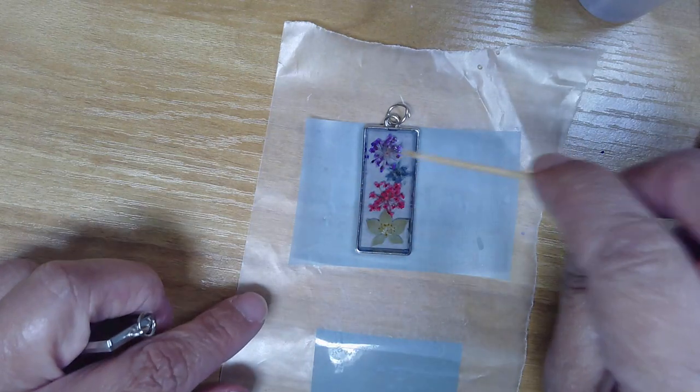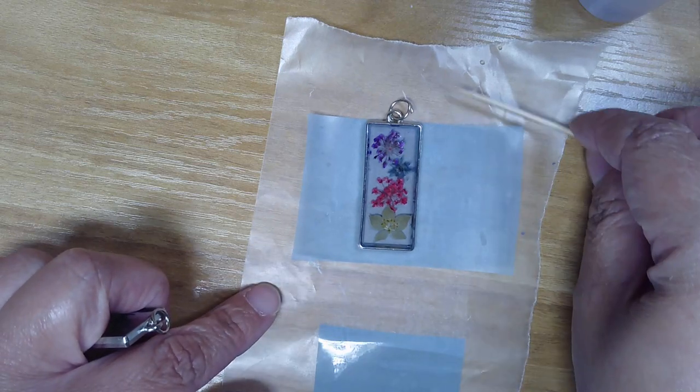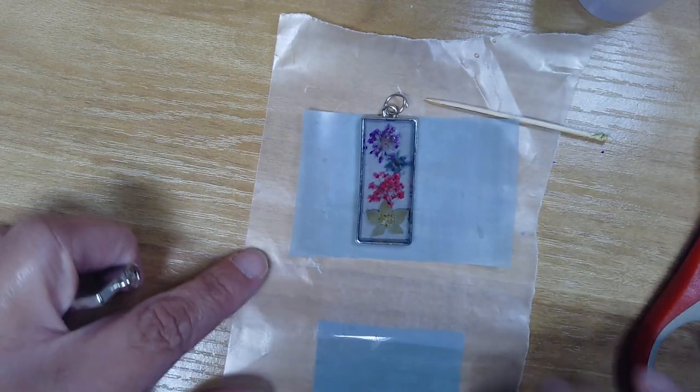Once they're done, you'll just peel the tape off and you can use your toothpick to poke at it to see if it's hardened enough for you to remove it from the tape.